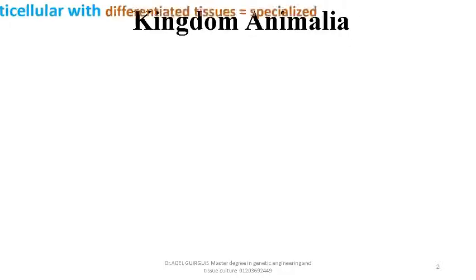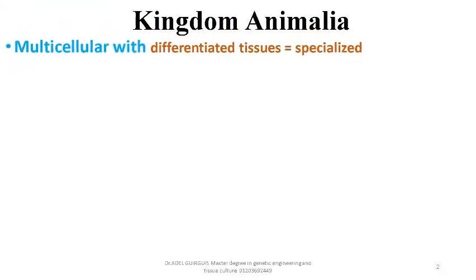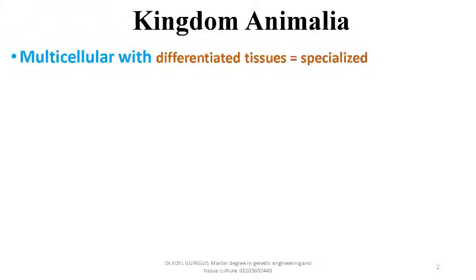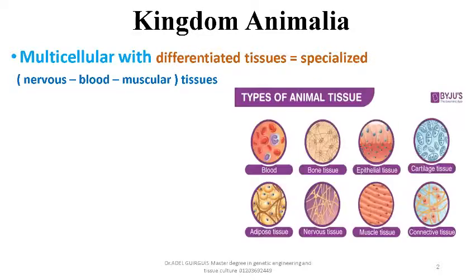Kingdom Animalia, also called Animal Kingdom, includes multicellular organisms with differentiated tissues — meaning specialized tissues doing different jobs. Examples include nervous tissue, blood tissue, and muscular tissue.